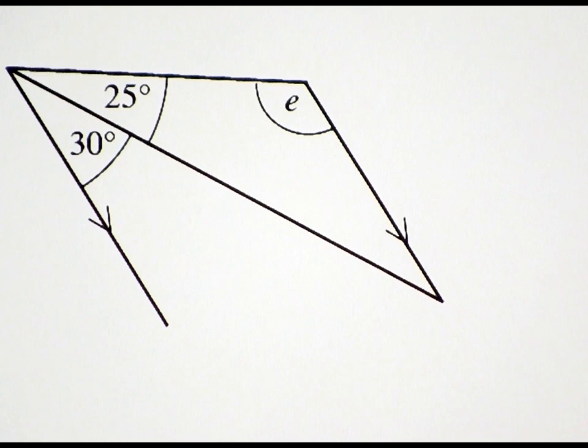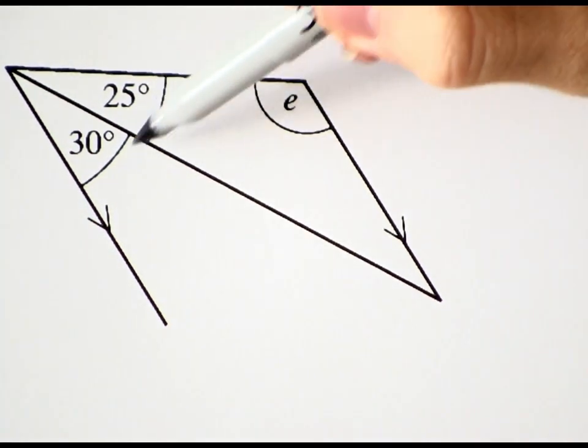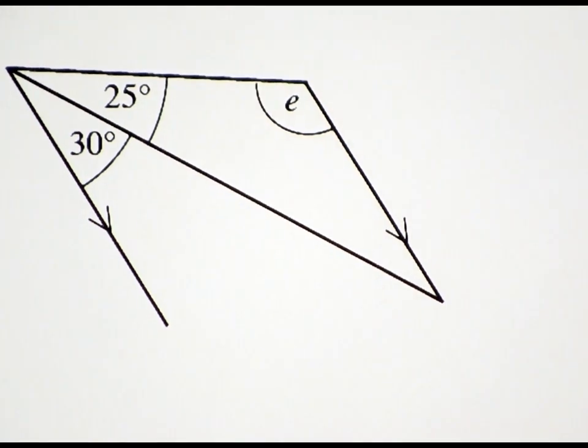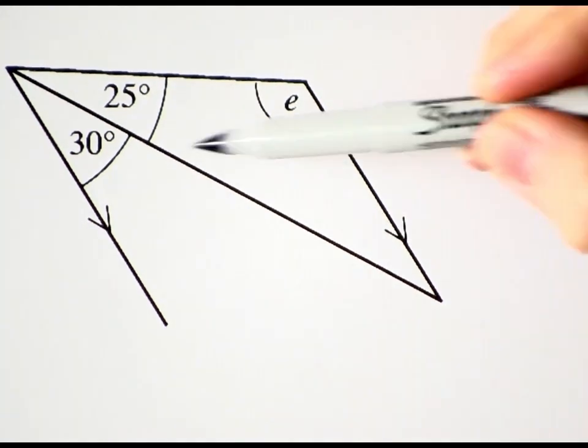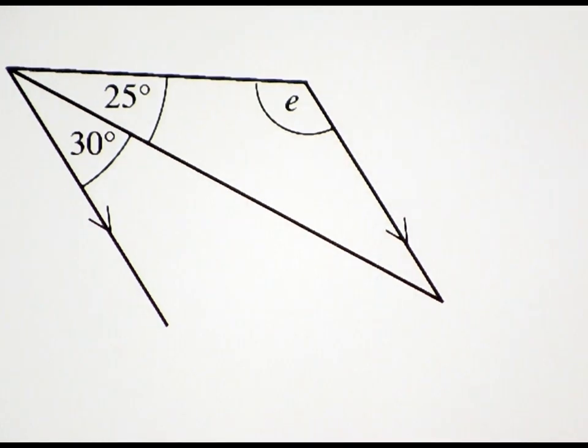I can see two solutions for E. These two angles and E are co-interior. Or, these two angles are alternate, and then the angles inside the triangle are supplementary. Notice that you're going to do the same operations, no matter which way you think your way through the problem.